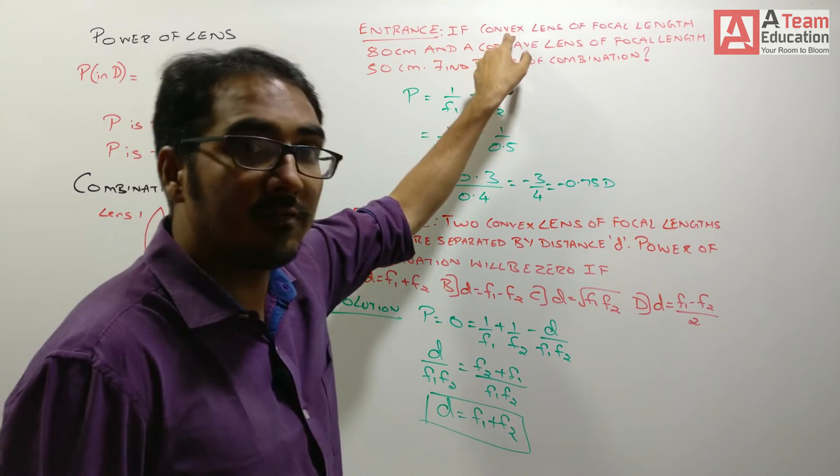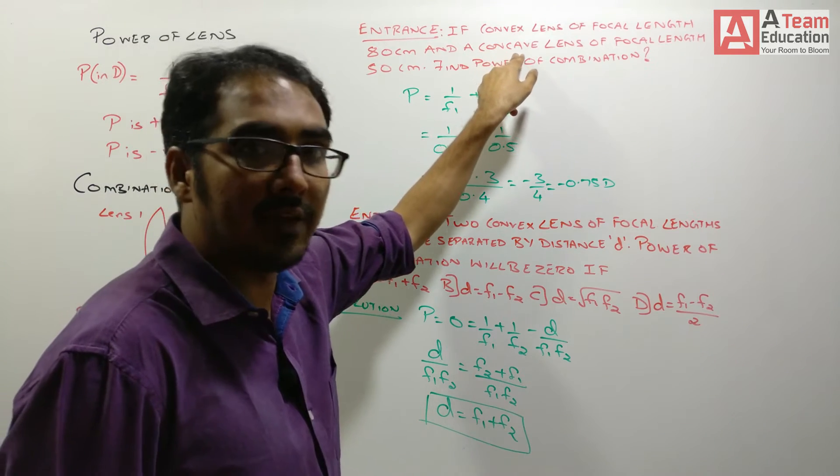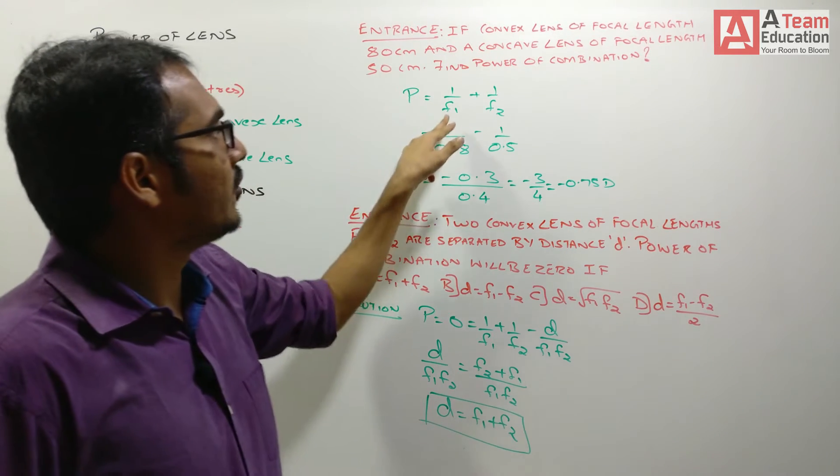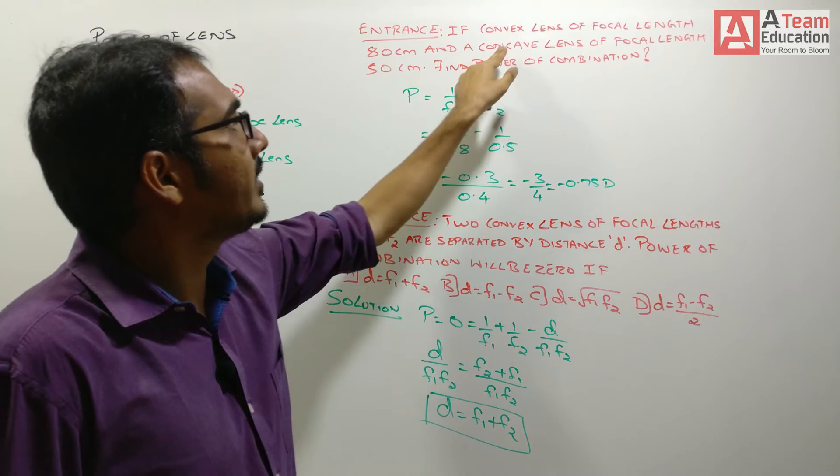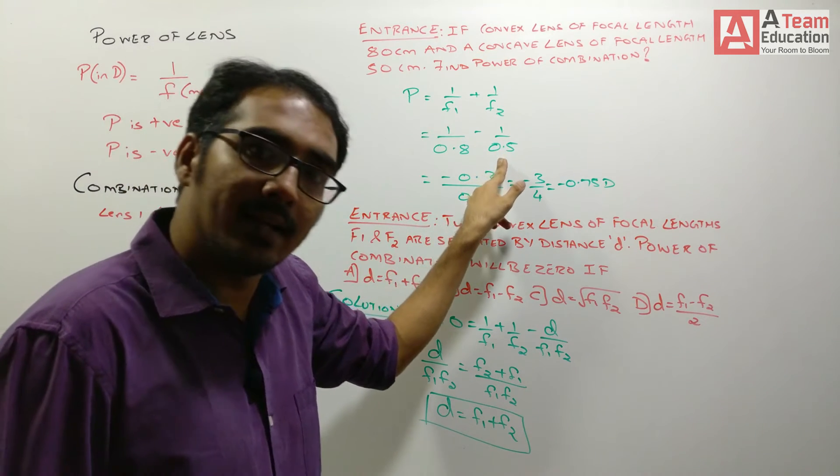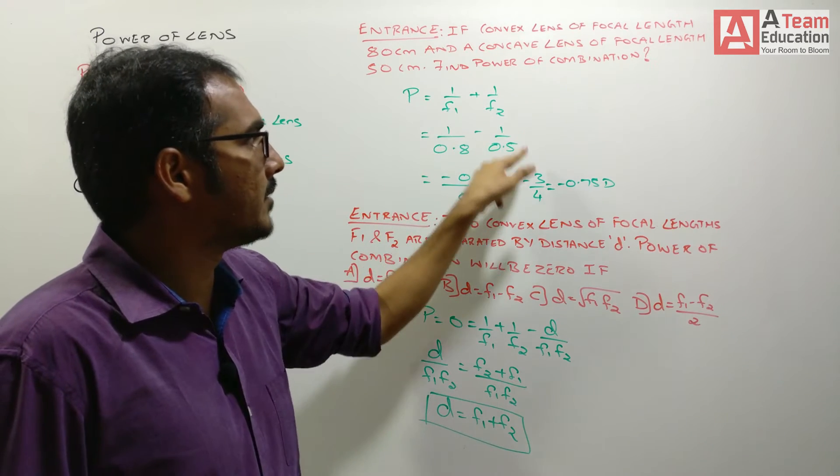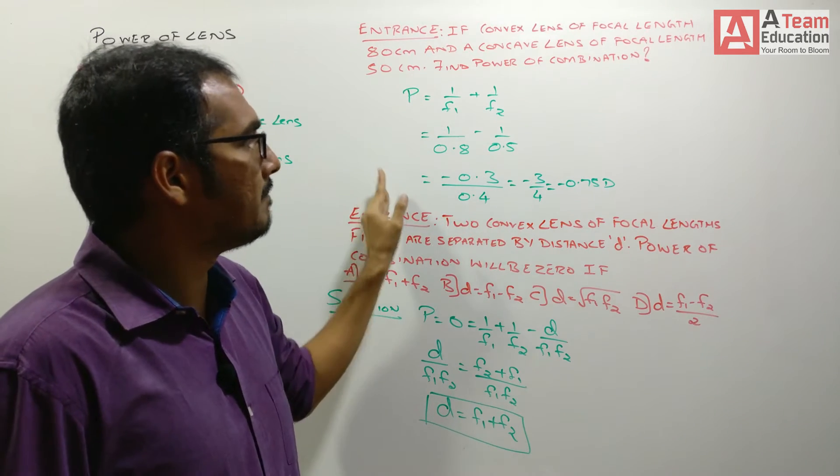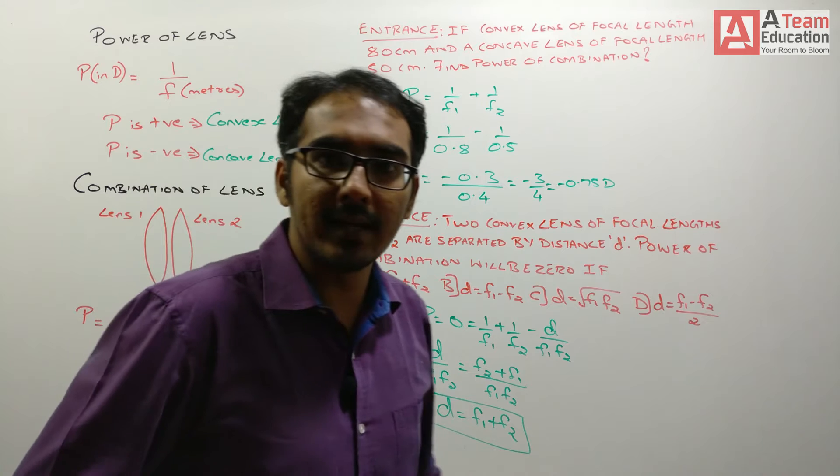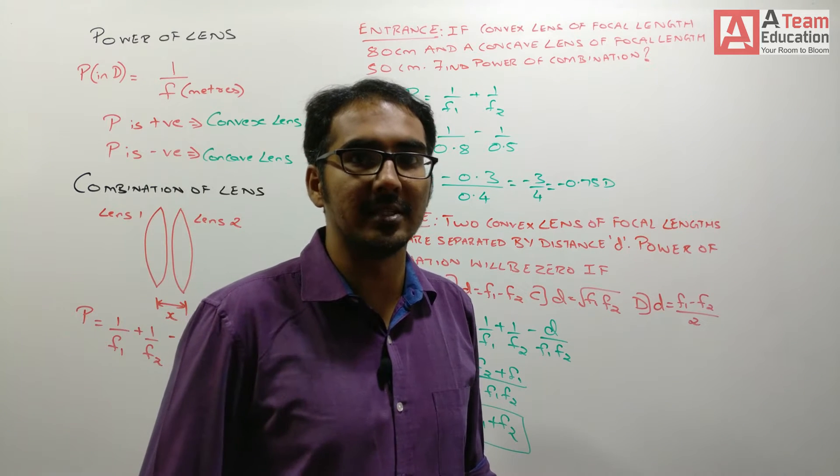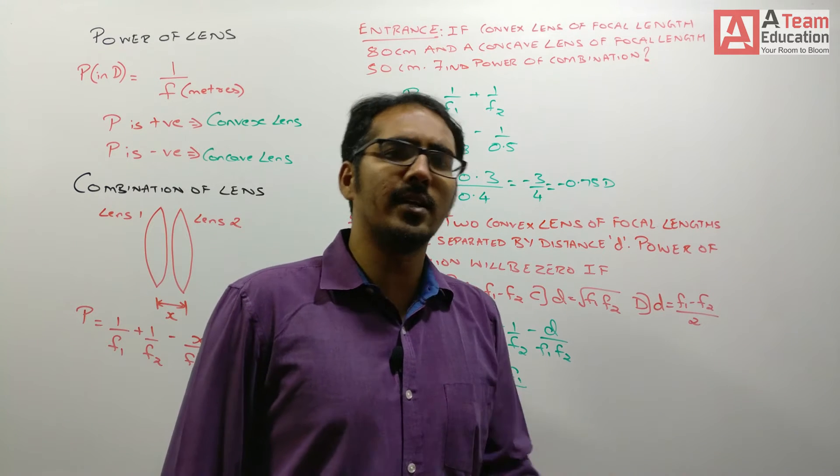Now, one lens was convex and one lens was concave. For convex lens, focal length is positive and with concave lens, focal length is negative. So this becomes 1 upon 0.8 minus 1 upon 0.5. You do simple maths, you will land up with minus 0.75 diopters. Let us take another question.